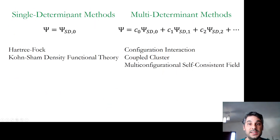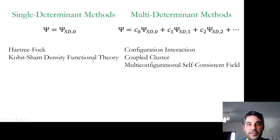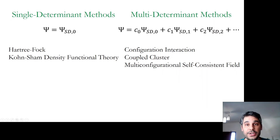There are various single-determinant methods in which the total wave function psi is composed of only one Slater determinant, written as psi sub SD,0. Hartree-Fock and Kohn-Sham density functional theory are usually single-determinant methods. Multi-determinant methods include, for example, configuration interaction, coupled cluster methods, or multi-configurational self-consistent field methods such as CASSCF and others.